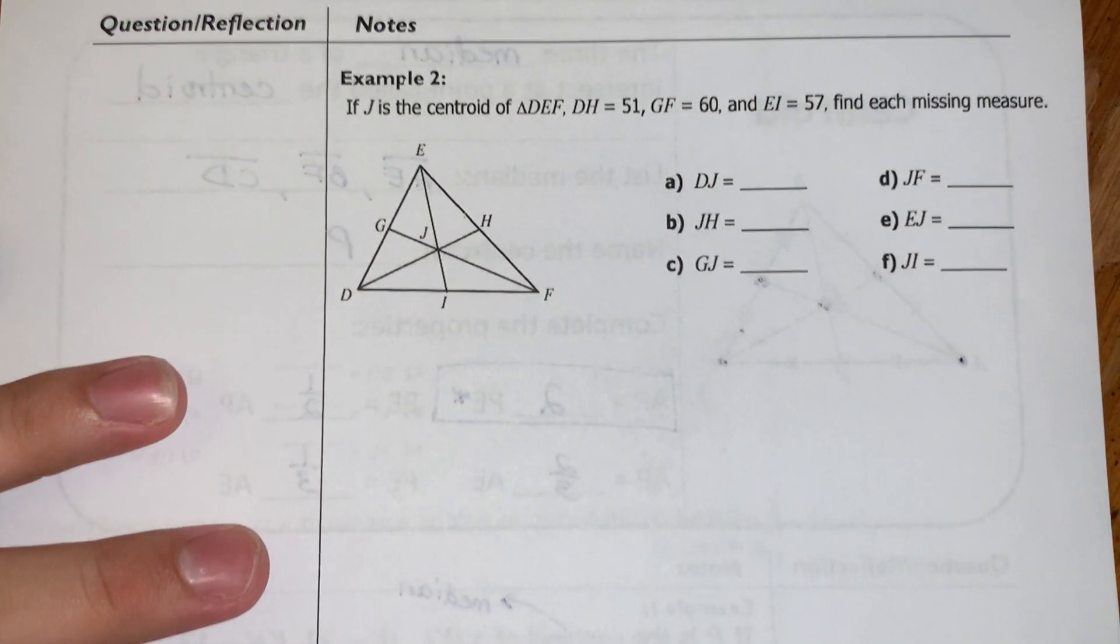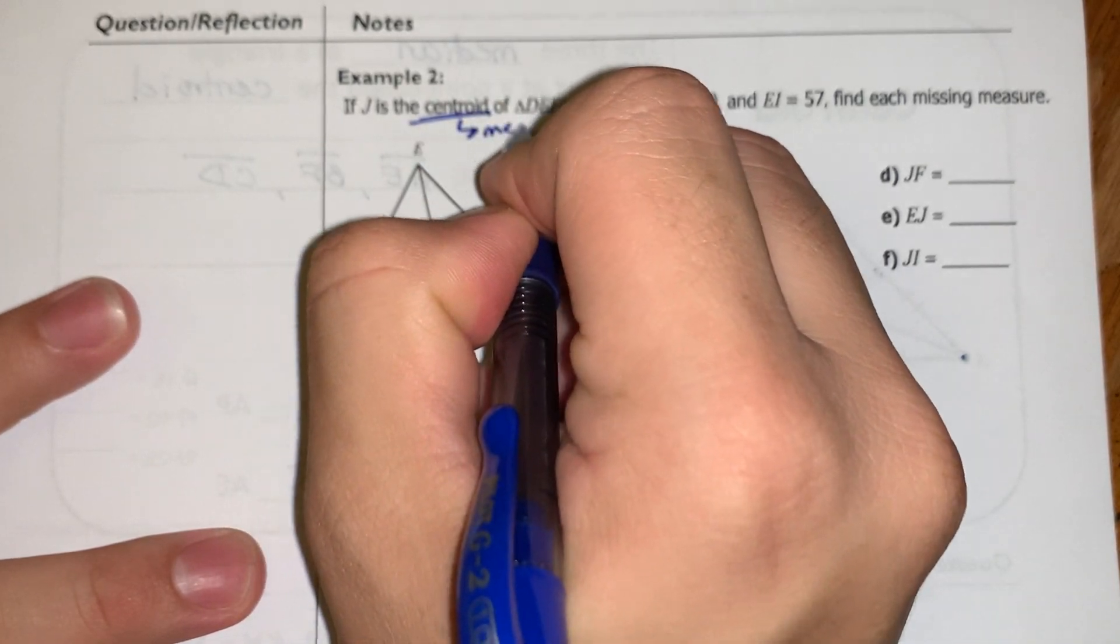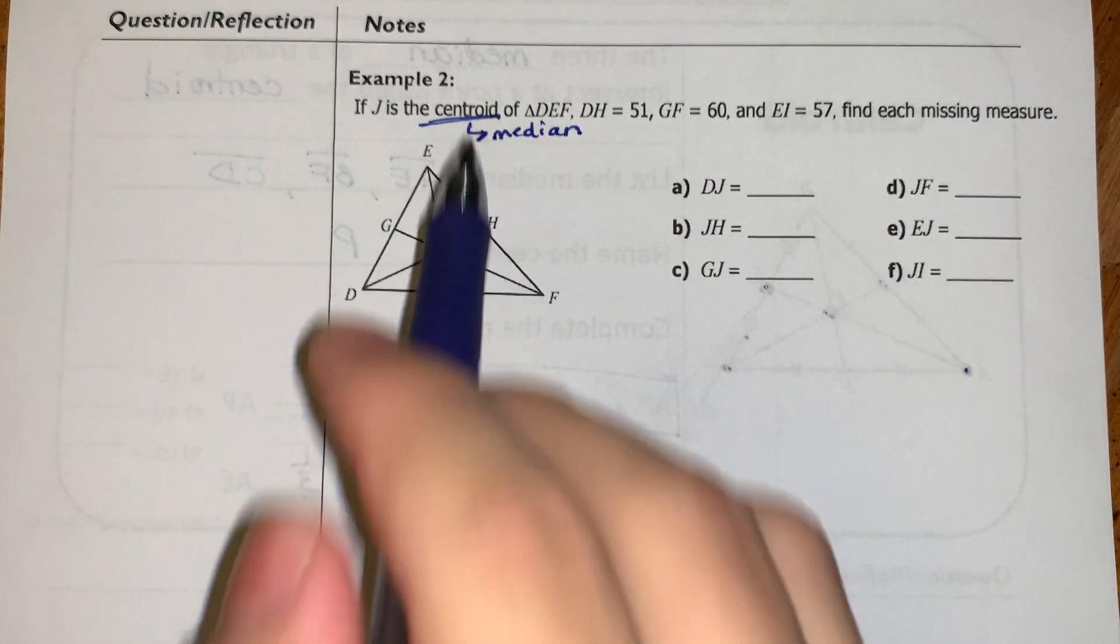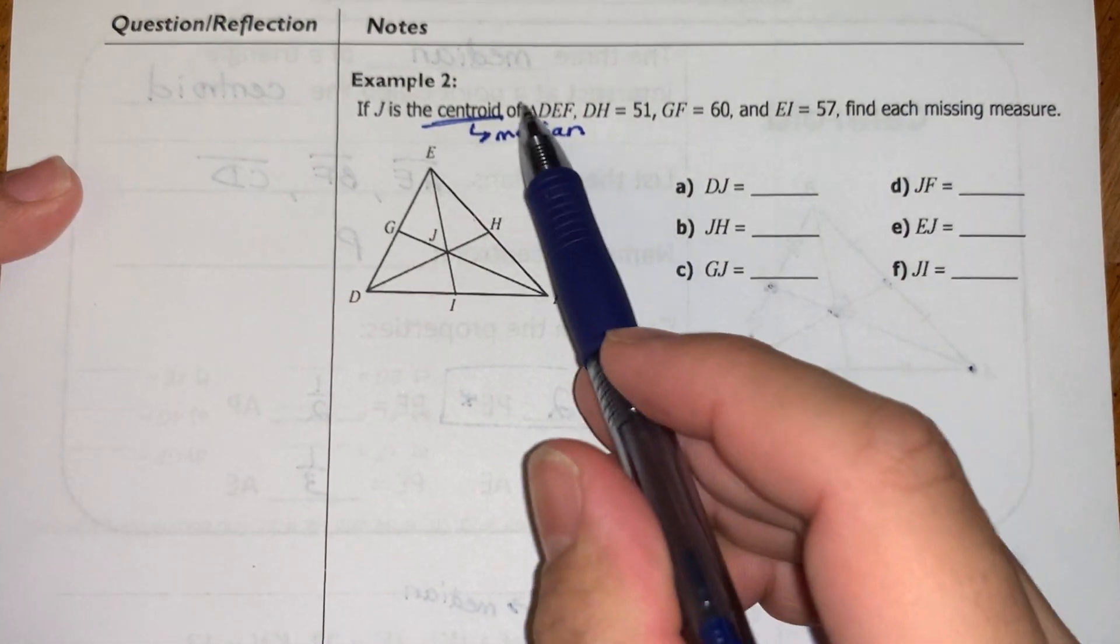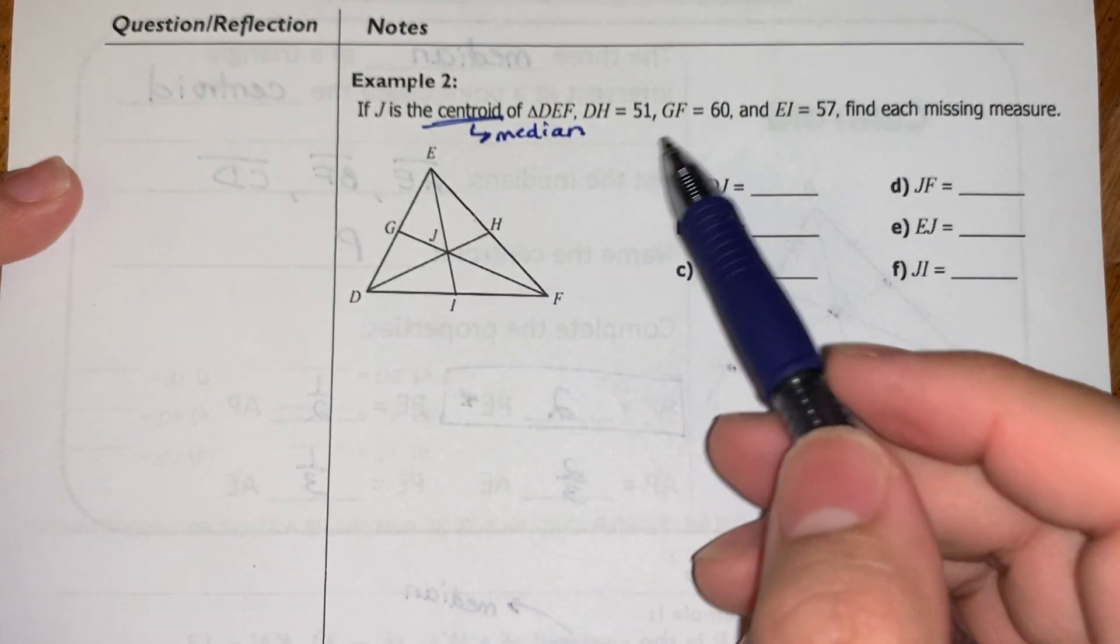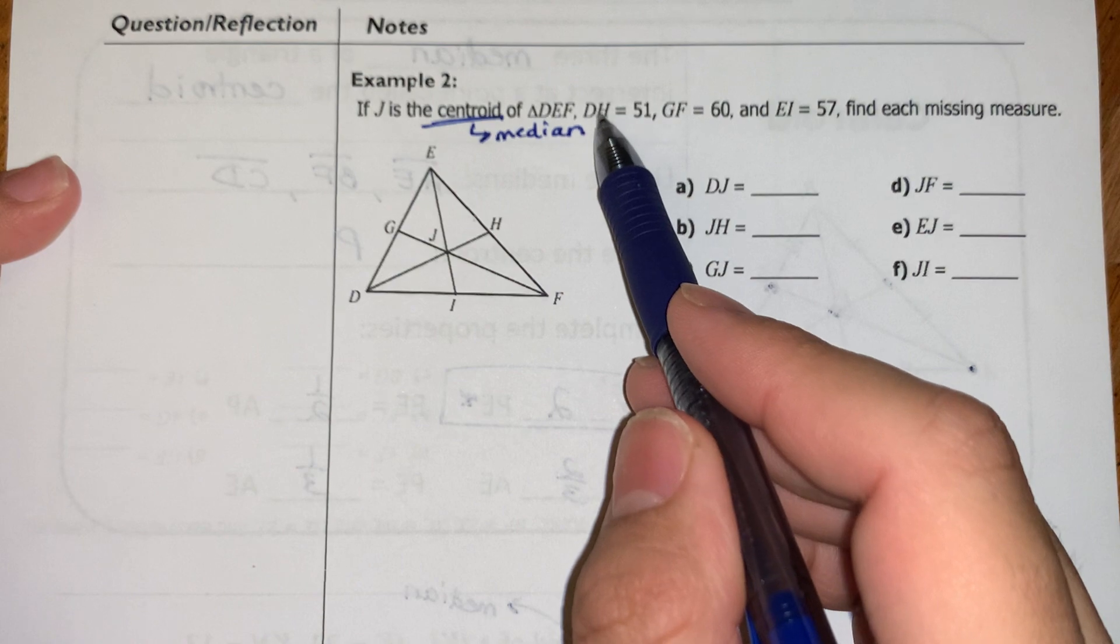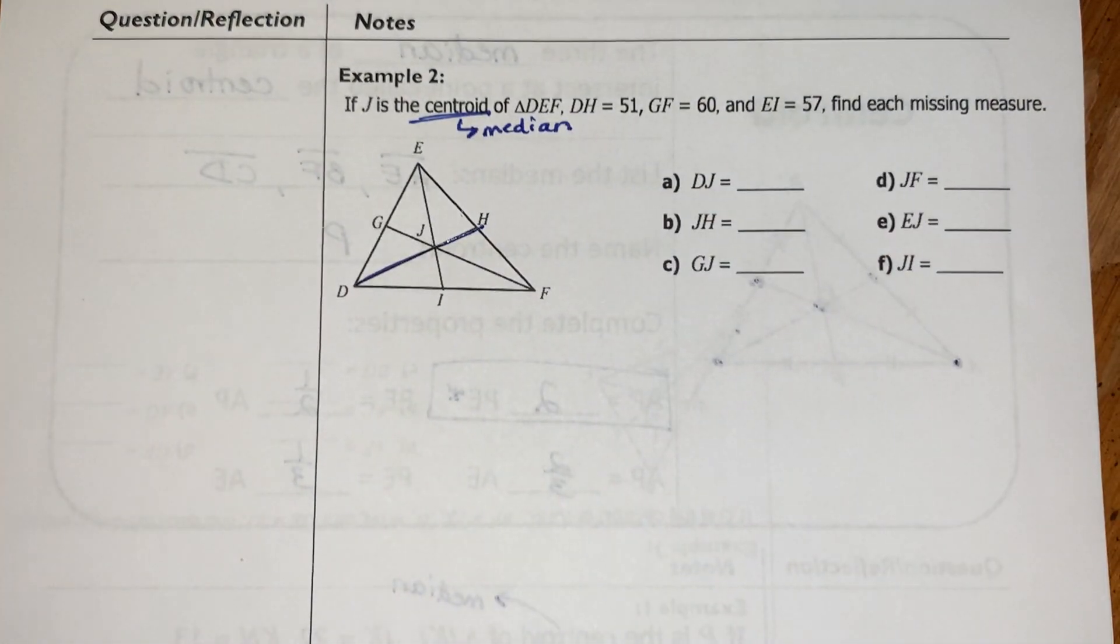So now if I look at this example, it says if J is the centroid, I'm going to underline that and put median. And my students will see me do this all the time. I always underline my center and say how it was created. So this is the centroid of triangle DEF, and they're saying that DH, this entire length is 51.